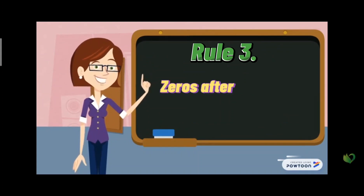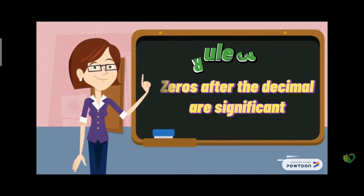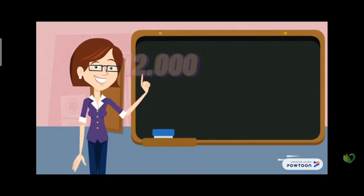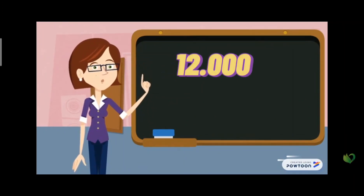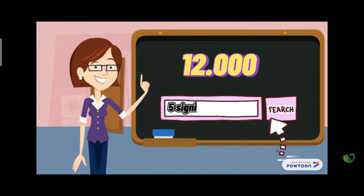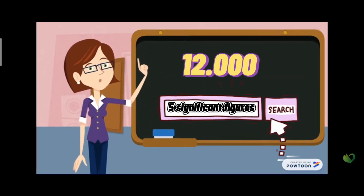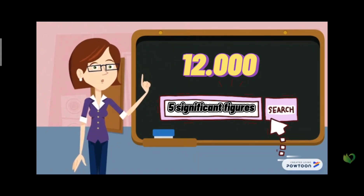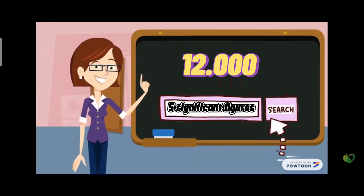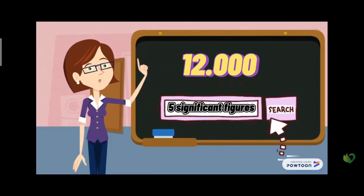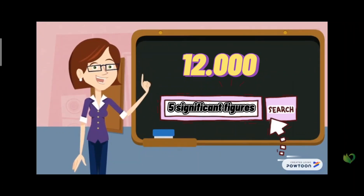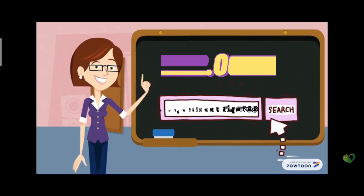Rule number three: zeros after the decimal are significant. For example, 12.000 has five significant figures. These three zeros are after the decimal place, so every single one of these digits is significant.